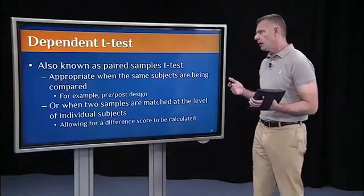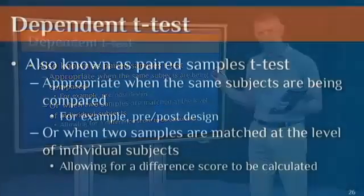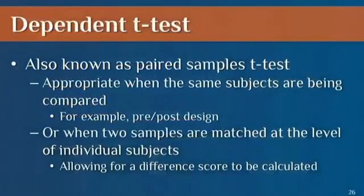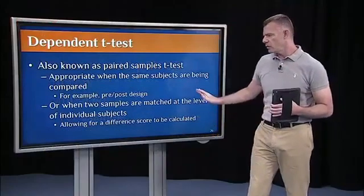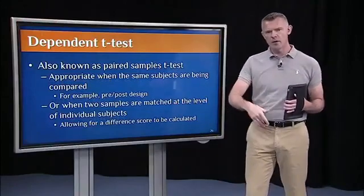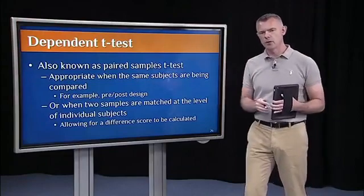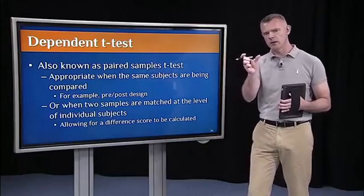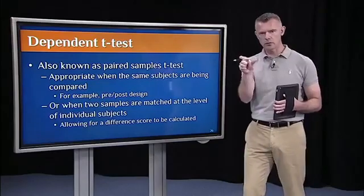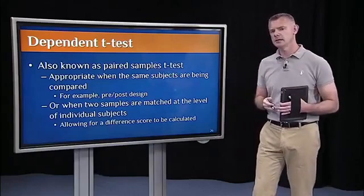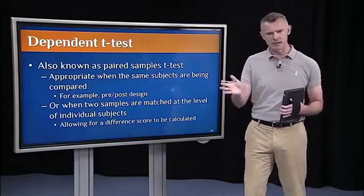As I mentioned in segment one, a dependent t-test, which is also known as a paired-samples t-test, you'll see that phrase in the R output, is appropriate when we have the same subjects or the same cases measured twice. We can calculate a difference score for each individual subject and then look at the mean difference score. The idea is that one measure is dependent on the other. They're related.